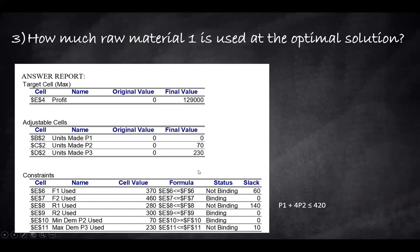Another question: how much raw material R1 is used at the optimal solution? Raw material R1 is the third row in the output, and we can see that it is a non-binding constraint. The question asks us to take the final value and substitute it into the inequality of the constraint — what is the value of the left-hand side? If you do that, you will get 280. So 280 units of raw material R1 are used at the point of optimality.